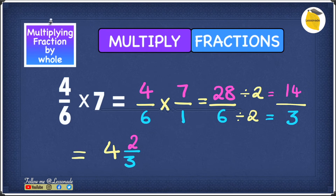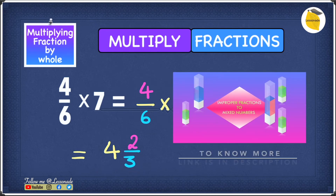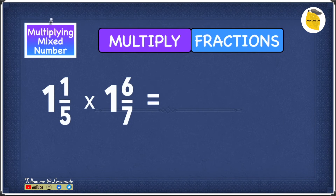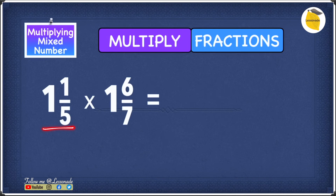If you're wondering how to convert improper fractions into mixed numbers, I've got a video on that so go check it out. Now let's look at how to multiply mixed numbers. The example is 1 and 1 over 5 times 1 and 6 over 7. First, we convert both into improper fractions: 1 and 1 over 5 becomes 6 over 5, and 1 and 6 over 7 becomes 13 over 7.